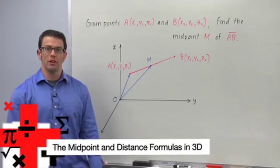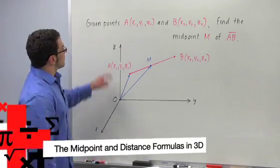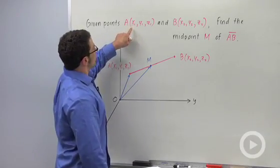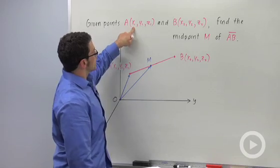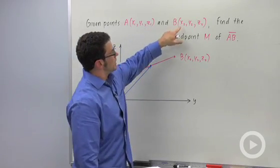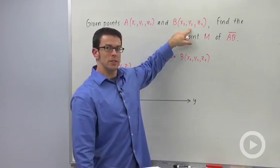I want to derive the midpoint formula for three dimensions. The midpoint formula is going to help me find the midpoint between points A, which has coordinates x₁, y₁, and z₁, and B, which has coordinates x₂, y₂, and z₂.